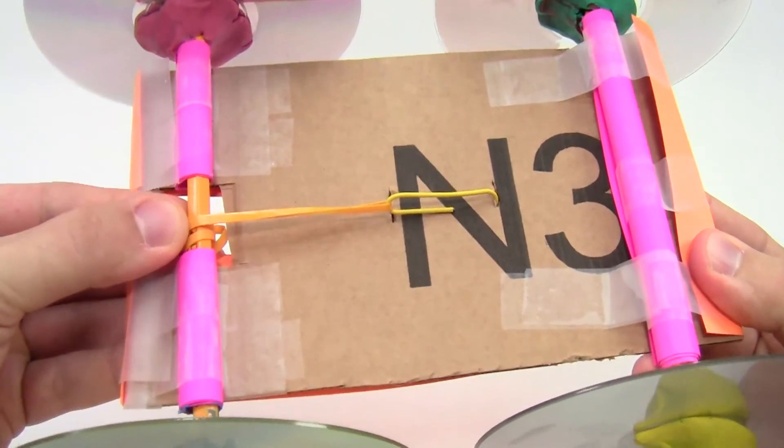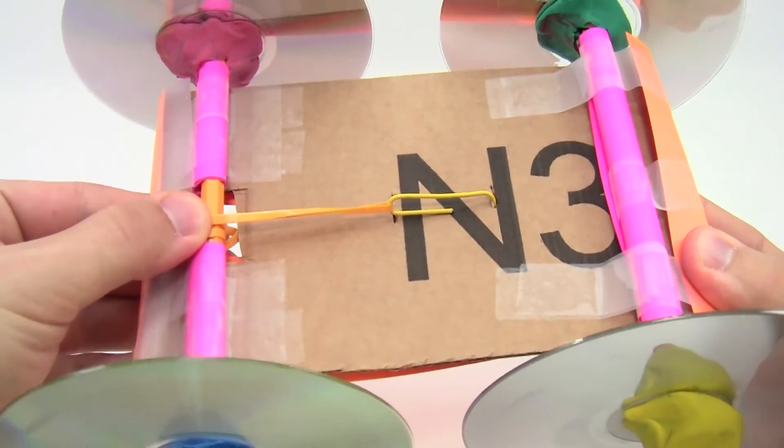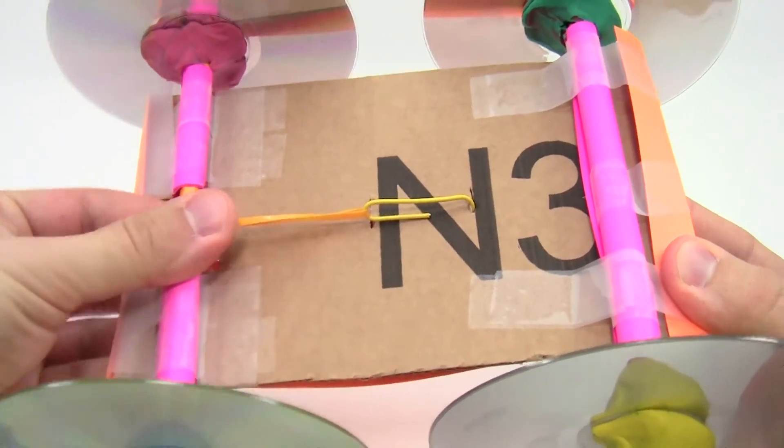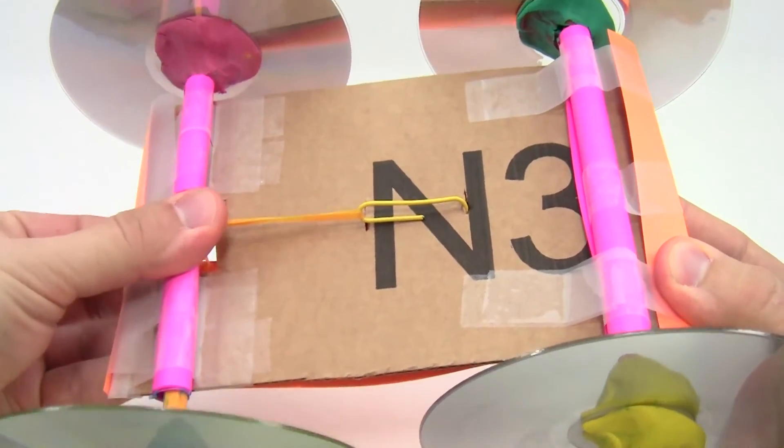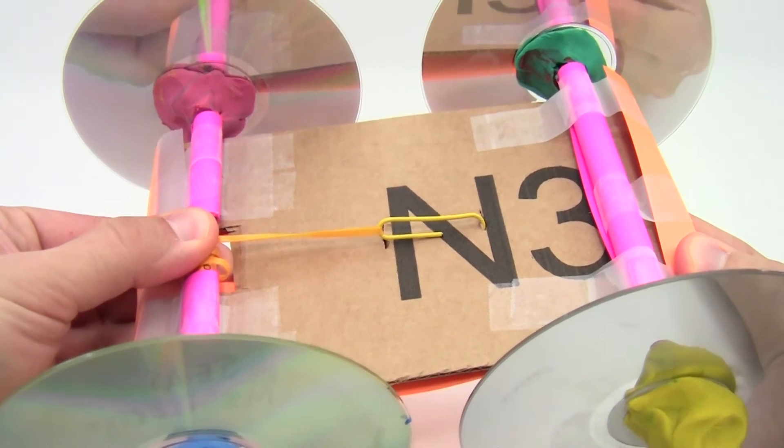To build a rubber band car, tie one end of a rubber band to one of your axles and hook the other end onto your chassis. When you wind the axle up, it will stretch the rubber band, and when you release, it'll make the wheels spin.